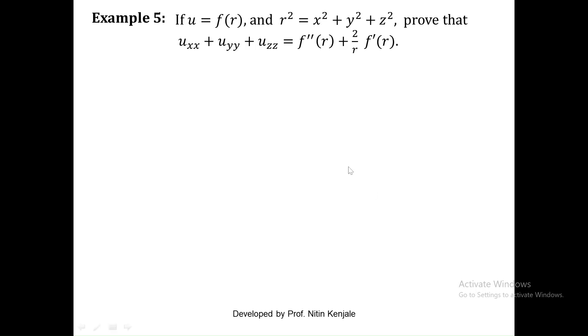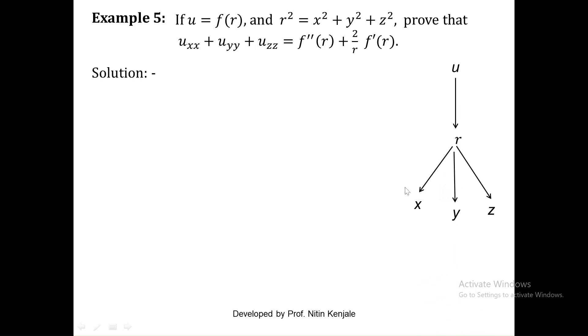In this example we are given that u is a function of r, and r square is x square plus y square plus z square. We are asked to prove that the sum of second order derivatives of u with respect to x, y and z is equal to f double dash of r plus 2 by r into f dash of r. Note that the definition of u is not explicitly given in terms of r — we are just told that u is a function of r. So let us draw the hierarchy tree diagram of the function.